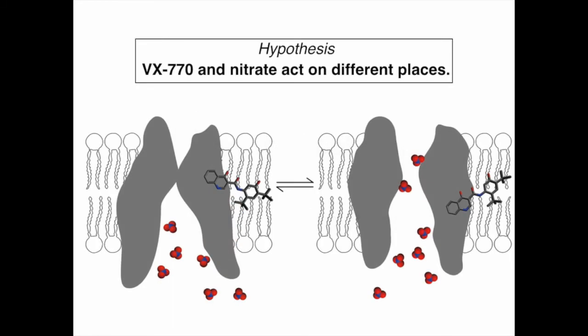We therefore hypothesize that VX-770 and nitrate affect the same gating transitions, but work through different binding sites, one at the lipid channel interface for VX-770, and one at the water channel interface for nitrate. This hypothesis will be supported if we can demonstrate that VX-770 and nitrate increase the open probability in an independent manner.